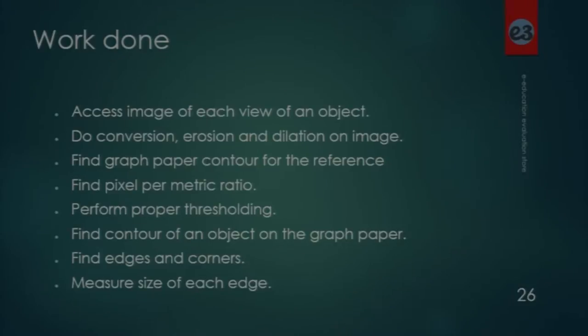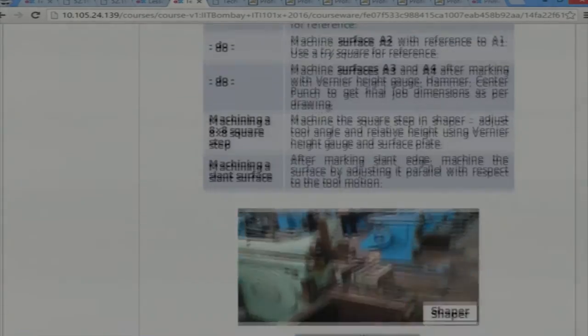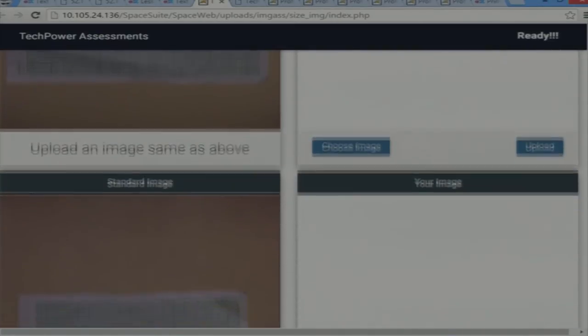First I took the student's image, then I calculated the size of the teacher's image. This is the course I introduced in EDX, and this is the raw material given to the student. These are the two shapes — one is the front view and one is the top view of the object. This is the assessment I made. This is the teacher object — the front view and the top view.